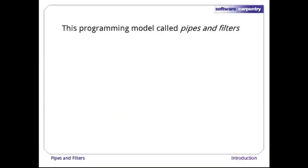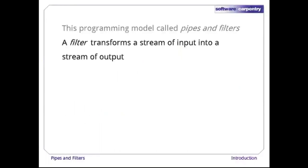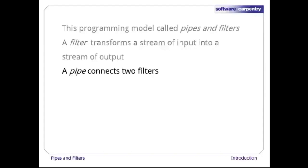This programming model is called pipes and filters. A filter is a program that transforms a stream of input into a stream of output. Almost all of the standard Unix tools can work this way — unless told to do otherwise, they read from stdin, do something to what they've read, and write to stdout. A pipe is just a connection between two filters. Behind the scenes, the computer may do some clever things to move data around, but from the user's point of view, all a pipe does is move bytes from one process to another.